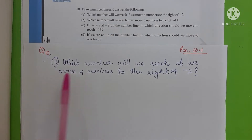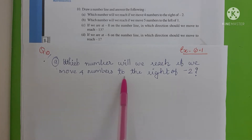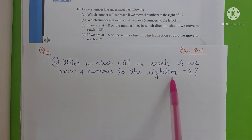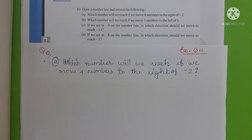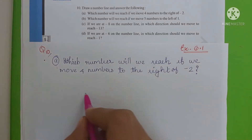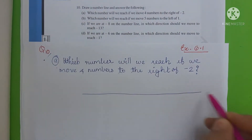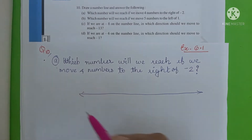Part A: Which number will we reach if we move 4 numbers to the right of minus 2? First of all, we can draw a number line.